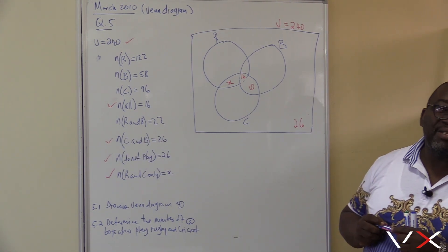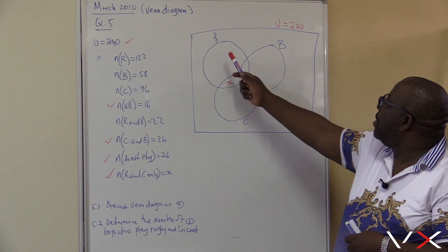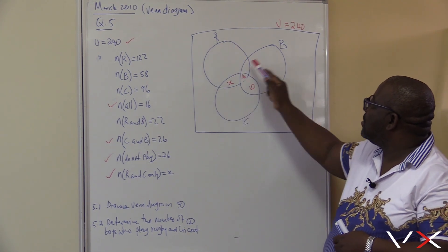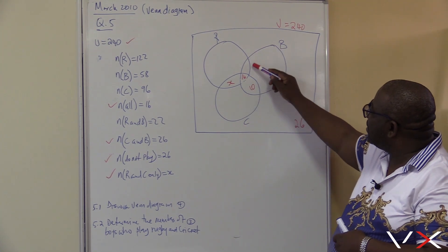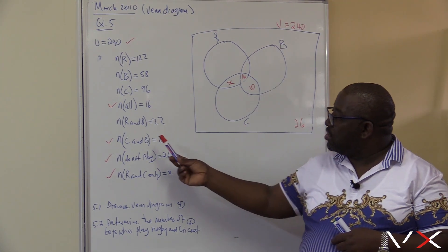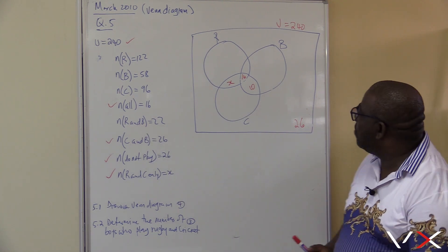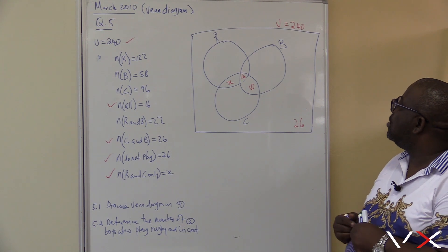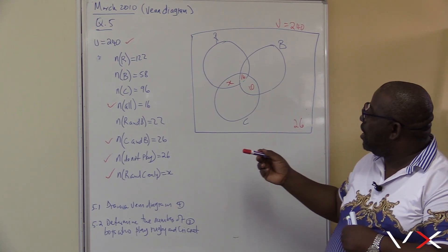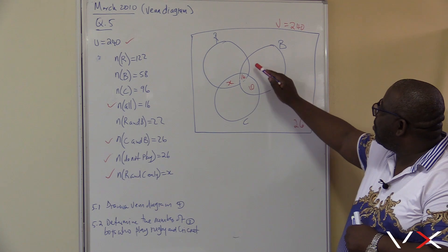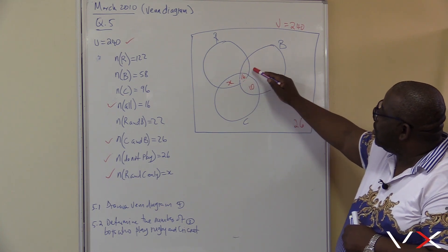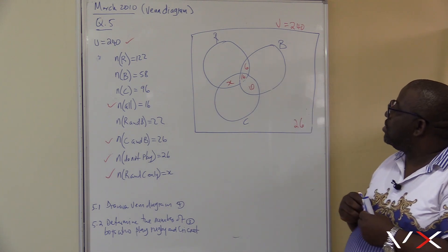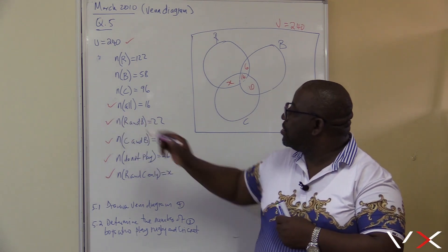Now rugby and basketball. The total for rugby and basketball must be 22. We already have 16 in the all-three region, so we're short of 6. So the rugby and basketball only region is 6. That is rugby and basketball — altogether it is 22. We're done with rugby and basketball.